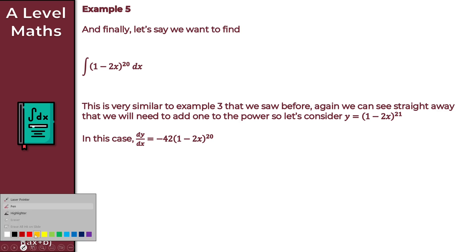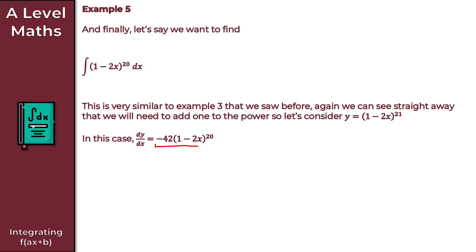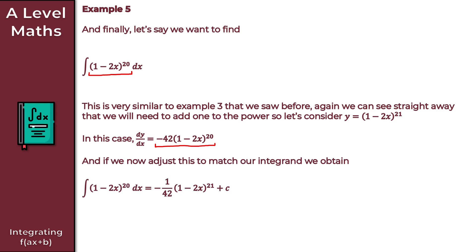We compare dy/dx to the integrand. To make dy/dx match the integrand, we divide through by −42. So the integral of (1 − 2x)^20 with respect to x is equal to −1/42 × (1 − 2x)^21 + c, where plus c is our constant of integration. That gives us the solution to Example 5, and brings us to the end of this video on integrating f(ax + b).